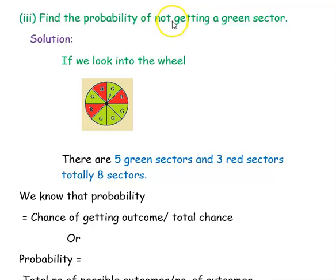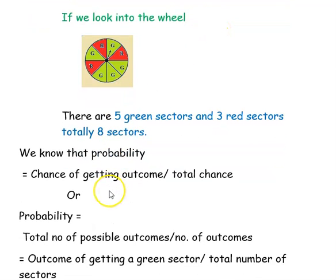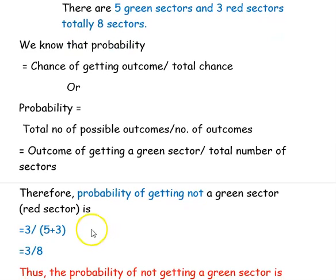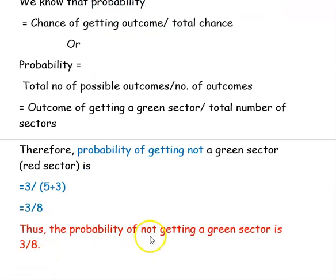Next question: find the probability of not getting a green sector. You have 5 green sectors and 3 red sectors. Not getting a green sector means landing on a red sector. So the probability is 3 red sectors divided by total 8 sectors. Thus the probability of not getting a green sector is 3 divided by 8.